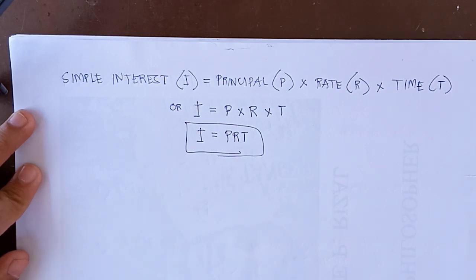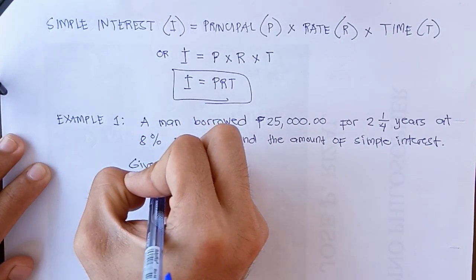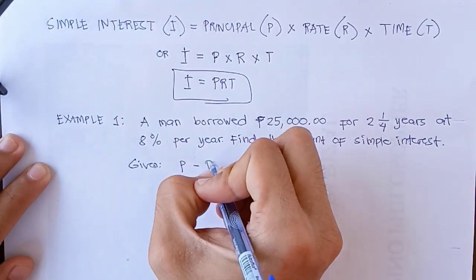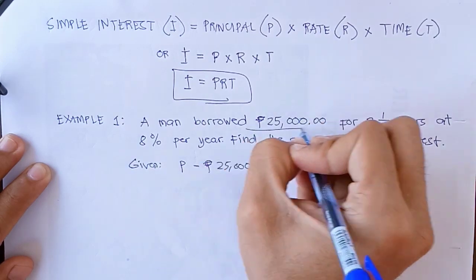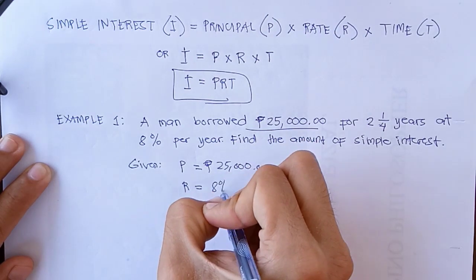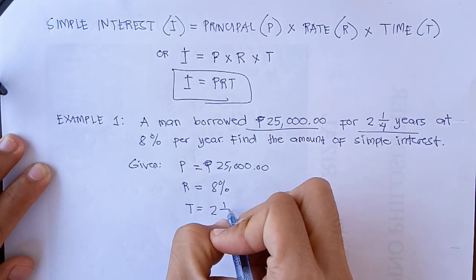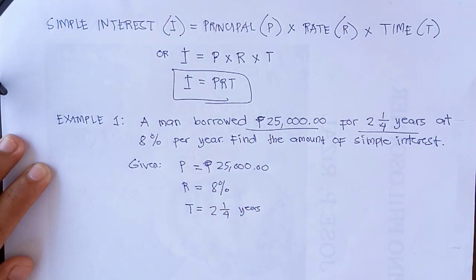Let's have an example. Example number one: A man borrowed 25,000 pesos for two and one-fourth years at eight percent per year. Find the amount of simple interest. By simply using the formula, we can find the amount of simple interest. But first, let's write the given. So the given is our principal P = 25,000, and our rate = 8%, and our time = 2¼ years.